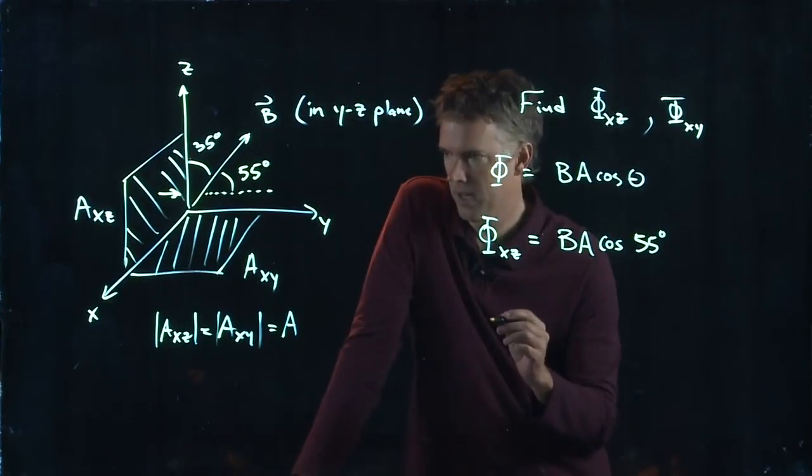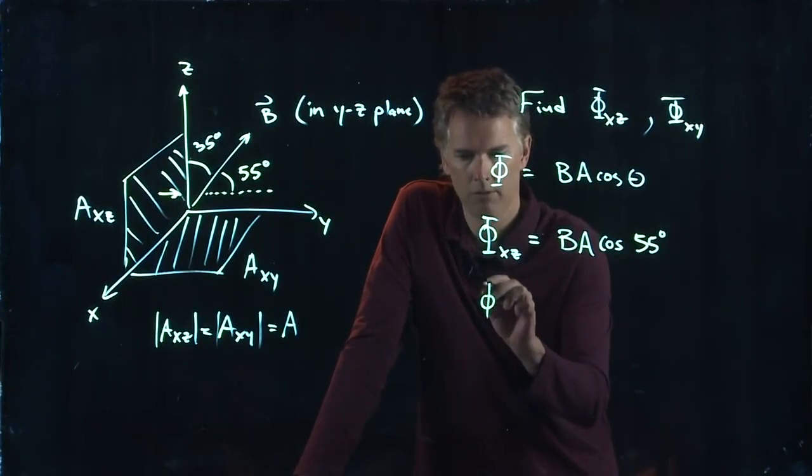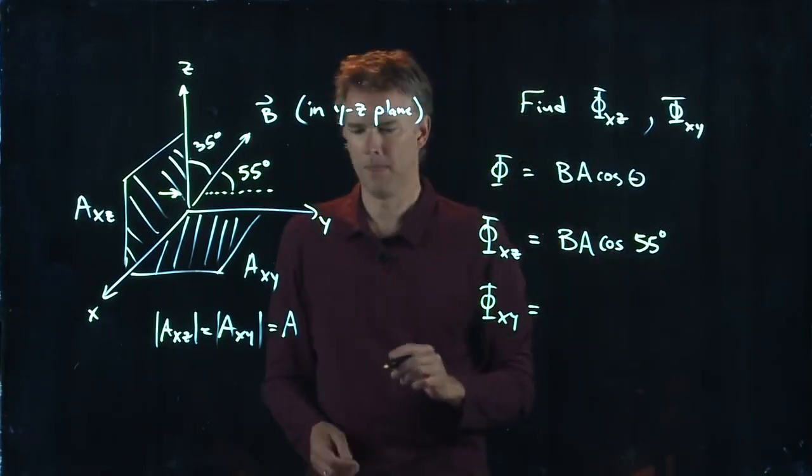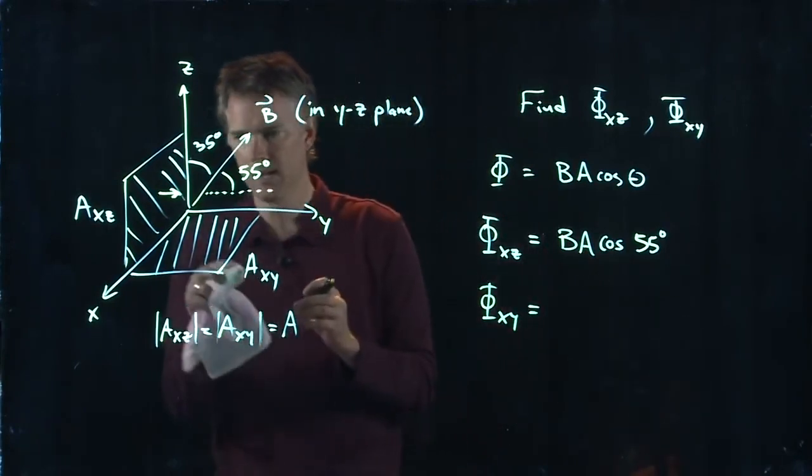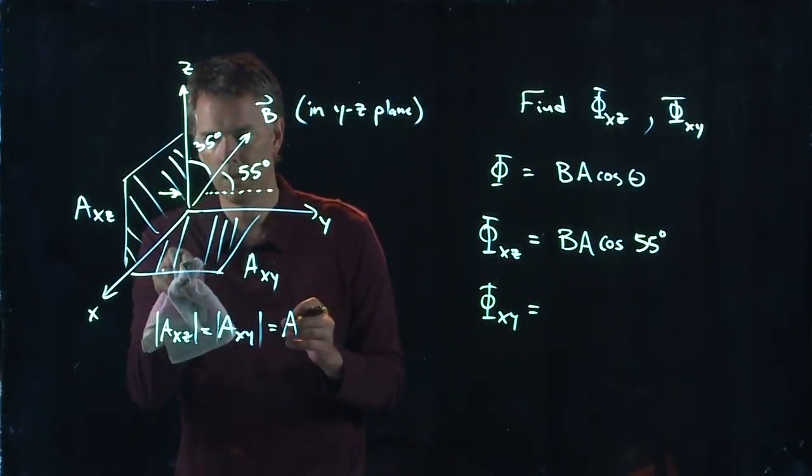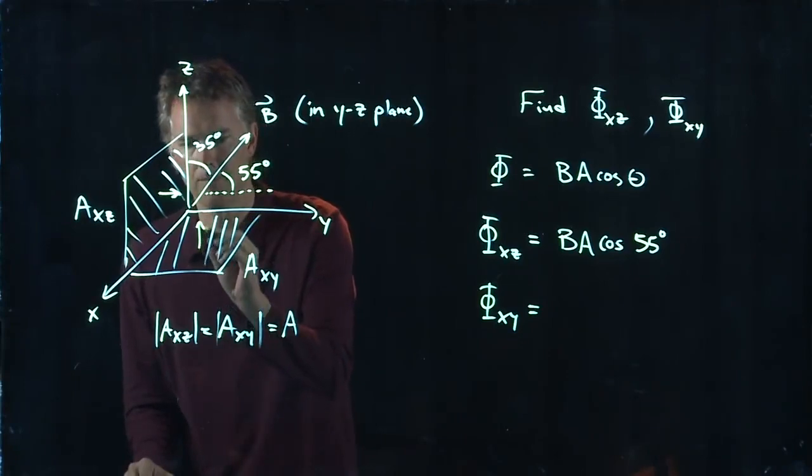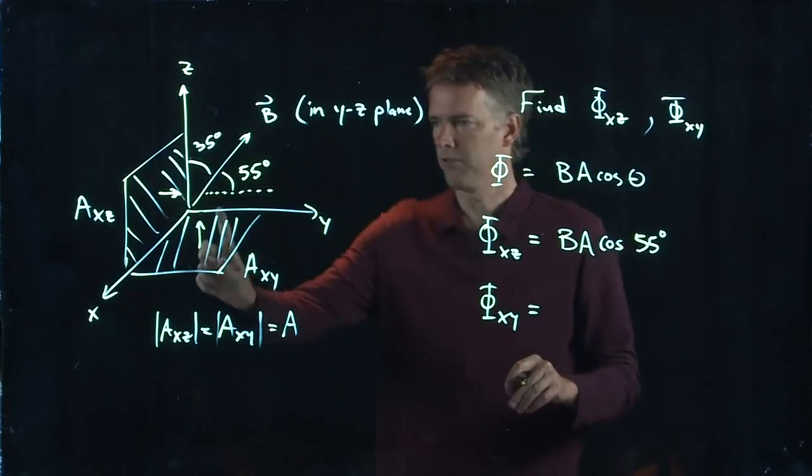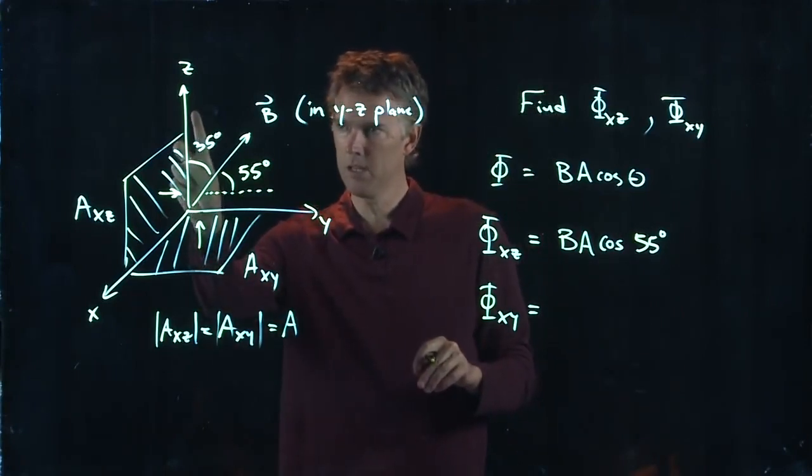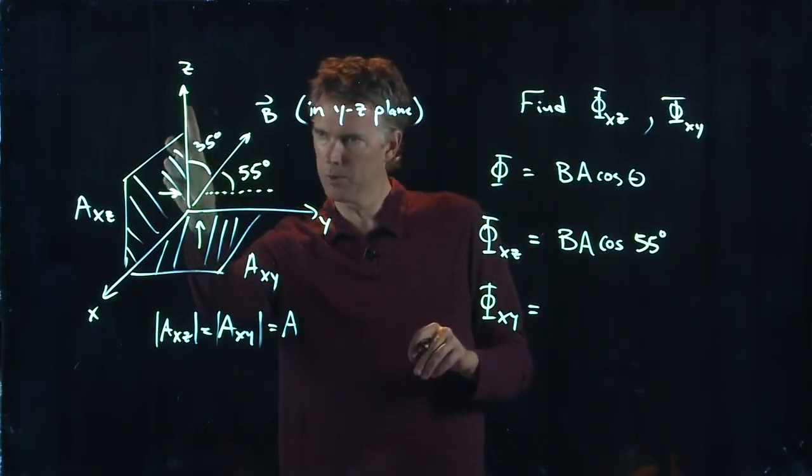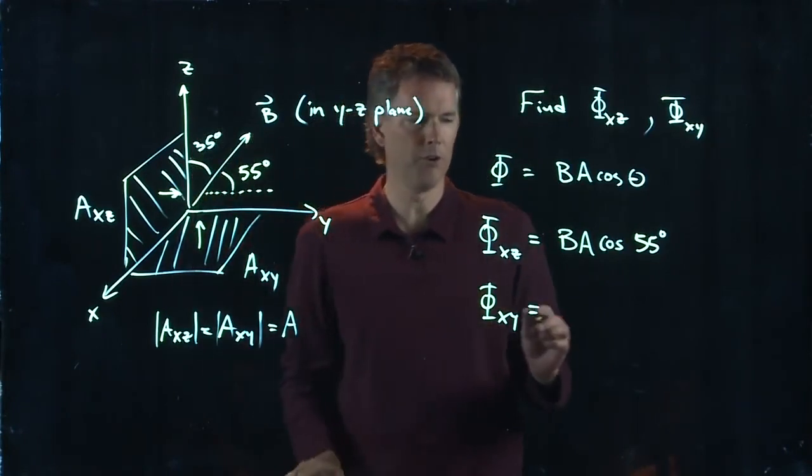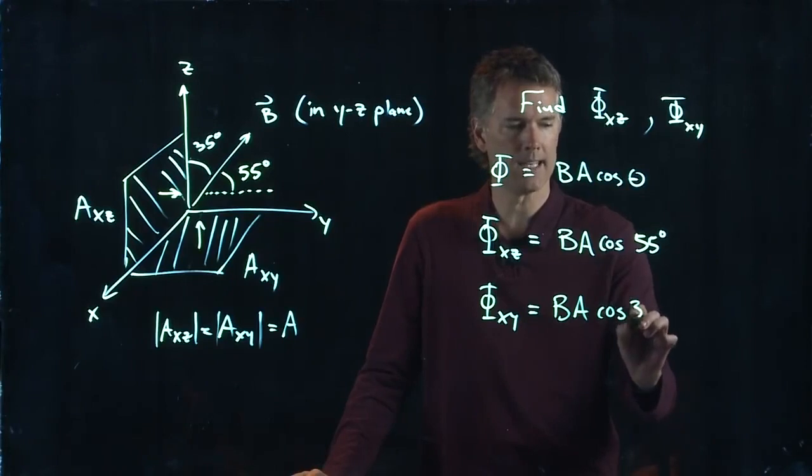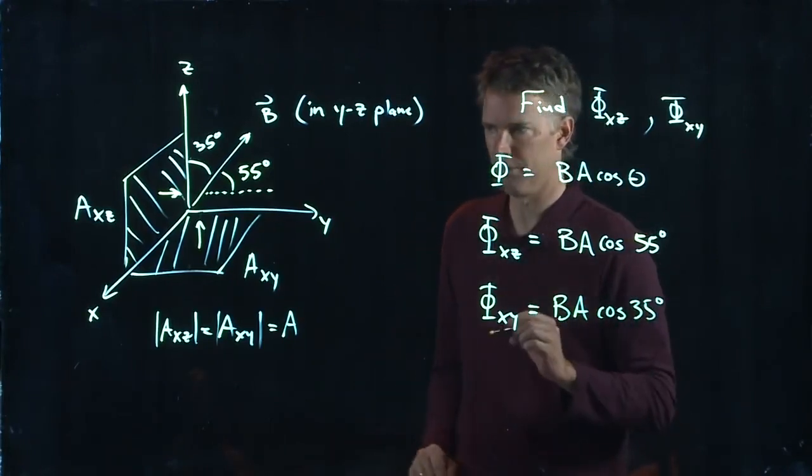What about the other one? Phi_XY. Well, A_XY is pointing straight up. Right? That's the normal to it. And so that is along the Z. And we know that the angle between Z and B is 35 degrees. So that one becomes B times A times the cosine of 35 degrees.